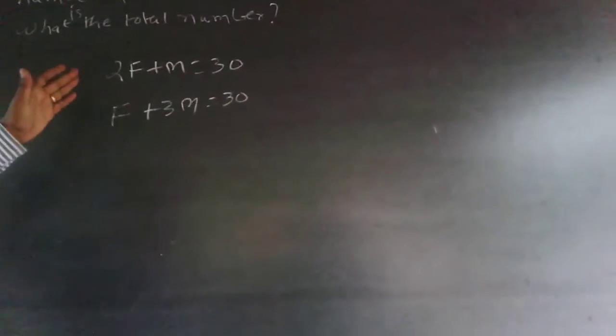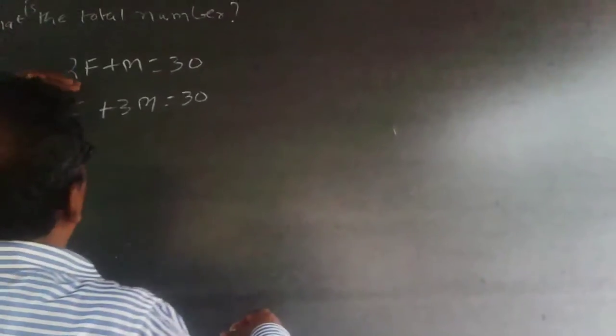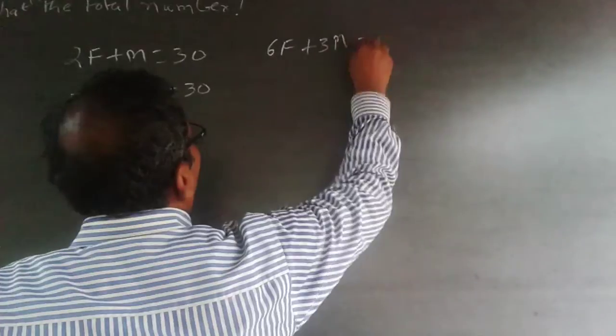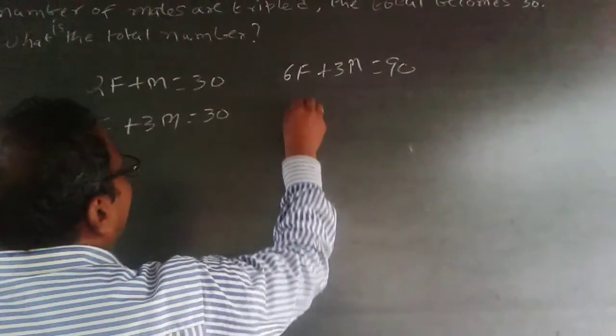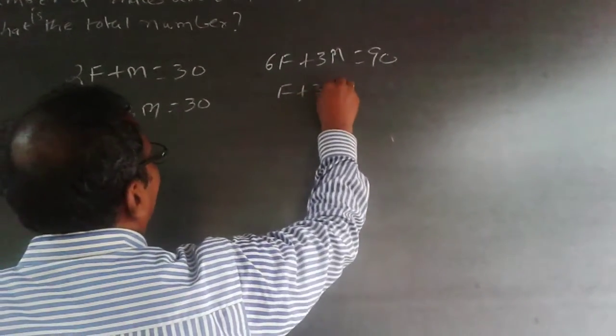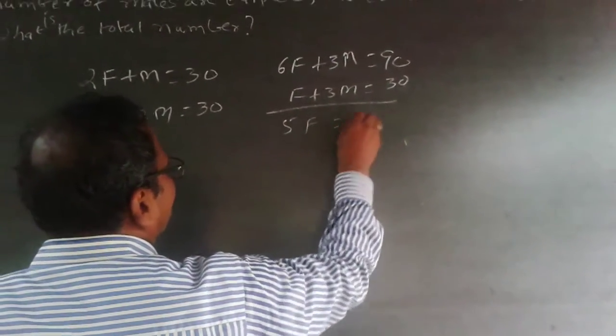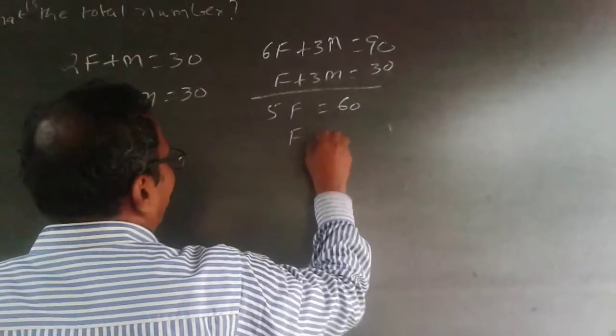I'll multiply this by 3, so it becomes 6F plus 3M equals 90. The other equation is F plus 3M equals 30. Now subtract: 5F equals 60, or F equals 12.